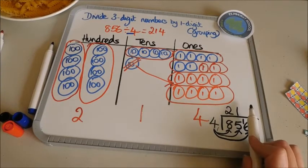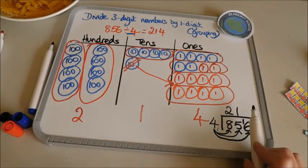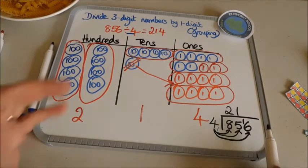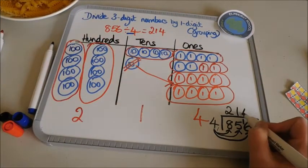And then how many fours in sixteen ones? I know it's the ones column. How many fours in sixteen? Four, eight, twelve, sixteen. That would be four. There you go.